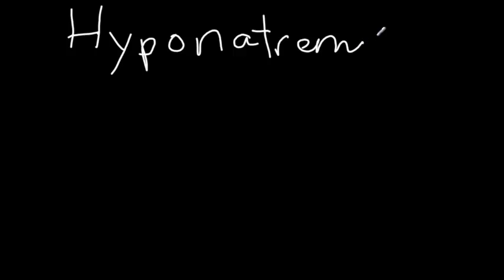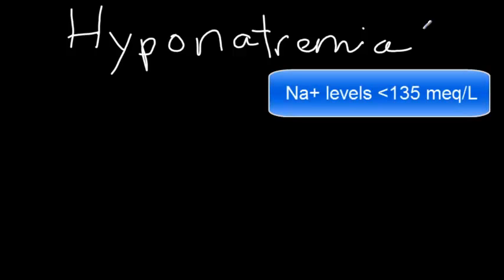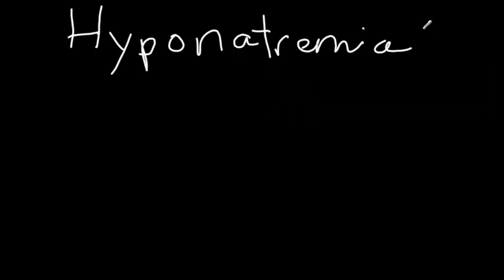We'll now be talking about the condition of hyponatremia. Hyponatremia is when we see levels of sodium less than 135 mEq per liter in the blood. There are some important things to remember about sodium: it is the most abundant electrolyte in the extracellular fluid, it is a good indicator of the body water balance, and water follows sodium. Also, the kidneys are responsible for excreting sodium from the body, so any changes in the kidneys are going to affect your sodium balance.